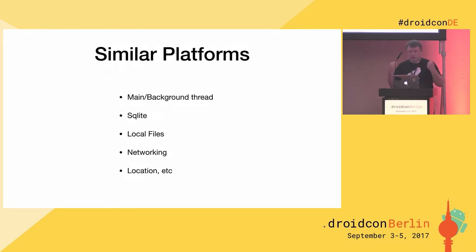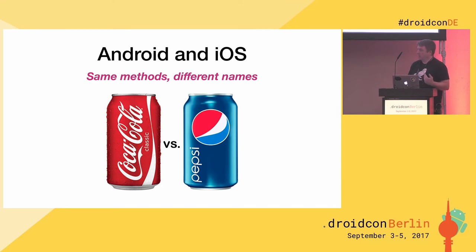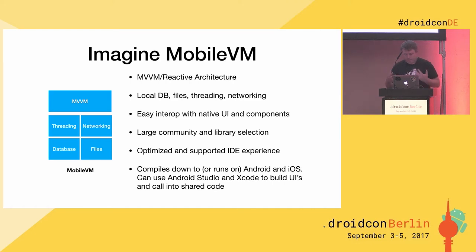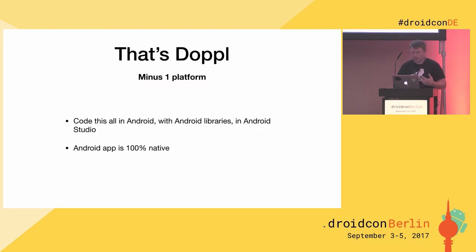These platforms are very similar. Fun fact: Android has a main thread and background threads, iOS has a main thread and background threads. It has SQLite, local files, networking, location — all these things exist on both platforms. I like to say they are same methods, different names. iOS and Android are so different, it's like Coke and Pepsi, but at the same time it's like soda water in a can. So if you can imagine a theoretical mobile VM — an MVVM reactive architecture, local DB, files, threading, networking, easy interop with native code, a large community with library selection, optimized IDE support, compiles down to Android or iOS — that's what that would look like. What we're doing is essentially that, subtracting one platform out of the mix and just making Android the standard platform that will run on iOS. The Android apps are 100% native, there is no cross-platform code on there.